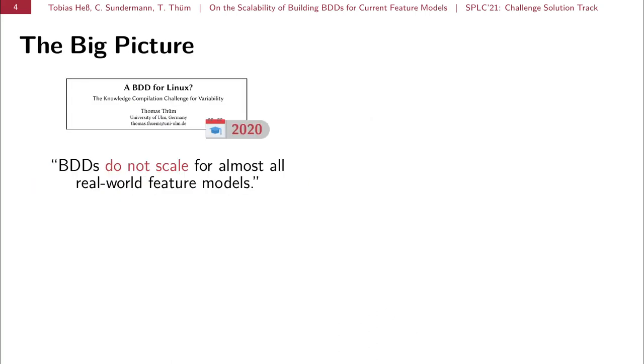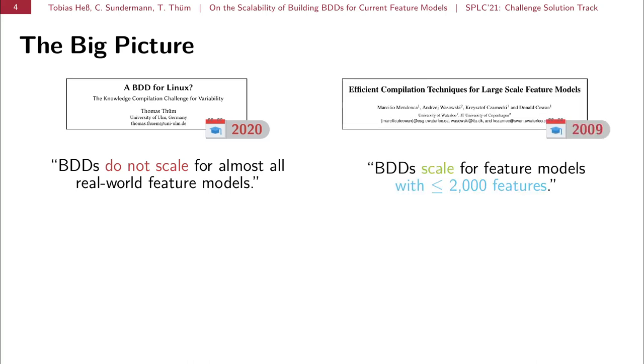So what is the big picture of this paper? This paper is an answer or a partial answer on the knowledge compilation challenge of Thomas Thume raised at SPLC 2020, which contains the statement that BDDs do not scale for almost all real-world feature models. And this is interesting because a decade earlier, there is this statement from the work of Mendonca et al.